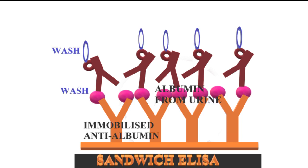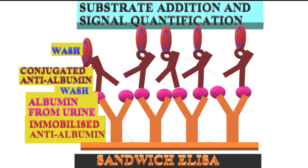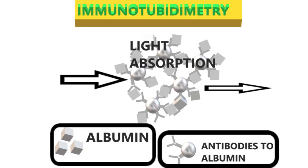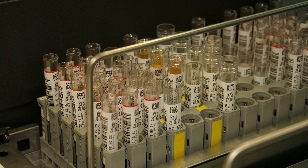Immunoturbidity: Albumin in the urine forms an insoluble complex with antibodies to human albumin. The turbidity caused by the complexes is spectrophotometrically measured at 340 nm and provides the albumin concentration. This method is simple, less expensive, and rapid analysis of large numbers of samples is possible.